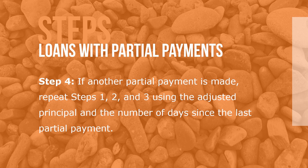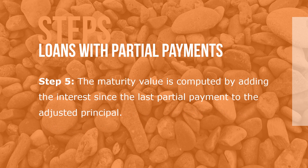Step 4: If another partial payment is made, repeat Steps 1, 2, and 3 using the adjusted principal and the number of days since the last partial payment. Step 5: The maturity value is computed by adding the interest since the last partial payment to the adjusted principal.